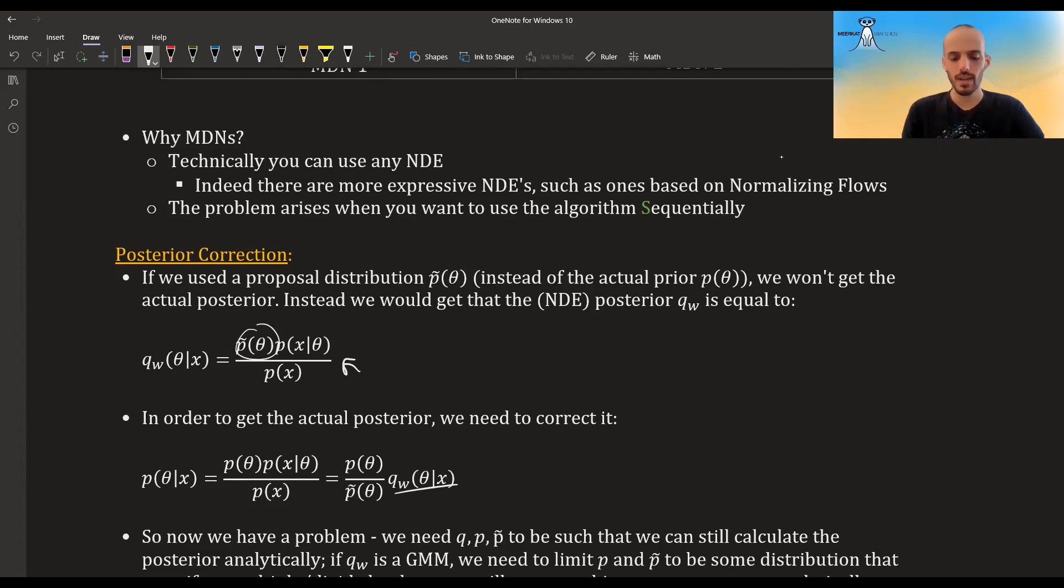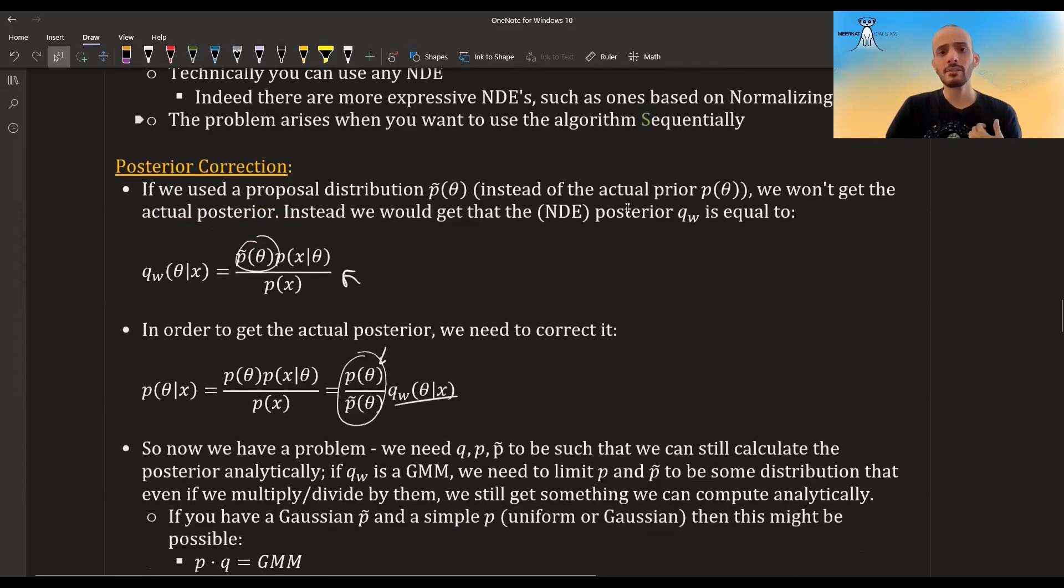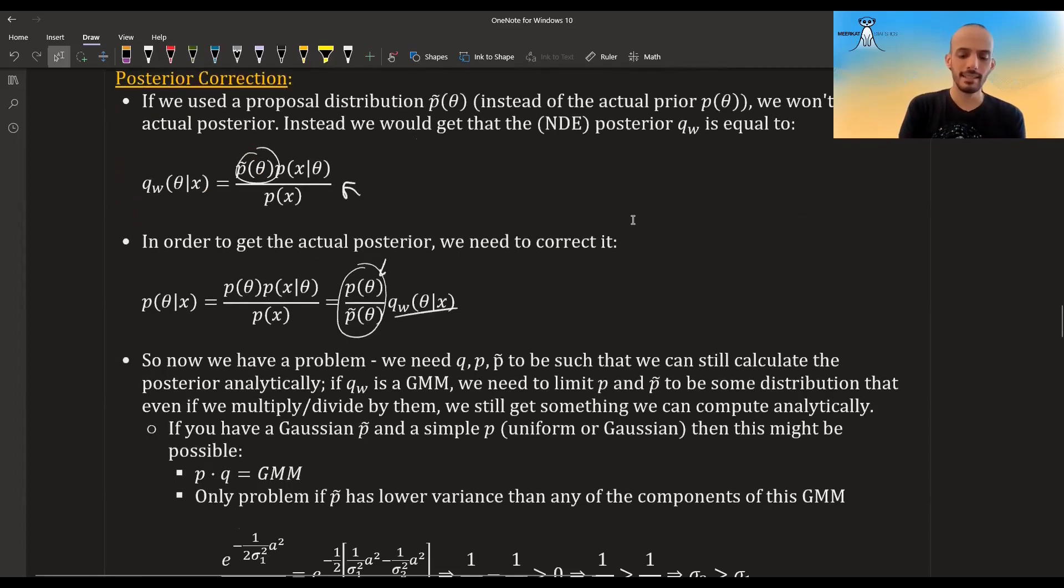What you do is you multiply your final GMM—the final distribution that you found—by this correction term. You divide by the proposal that you used and you multiply by the actual prior.